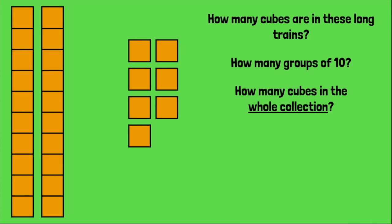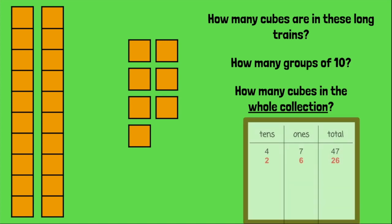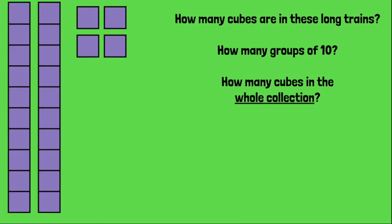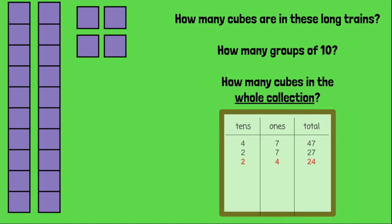Let's try another. How many cubes are in these long trains? Ten. How many groups of ten? Two. How many cubes in the whole collection? If you did two tens, six ones, and a total of 26, you were correct. All right, how many groups of ten do you see here? How many cubes in the whole collection? You're getting fast. Two tens and four ones is 24.